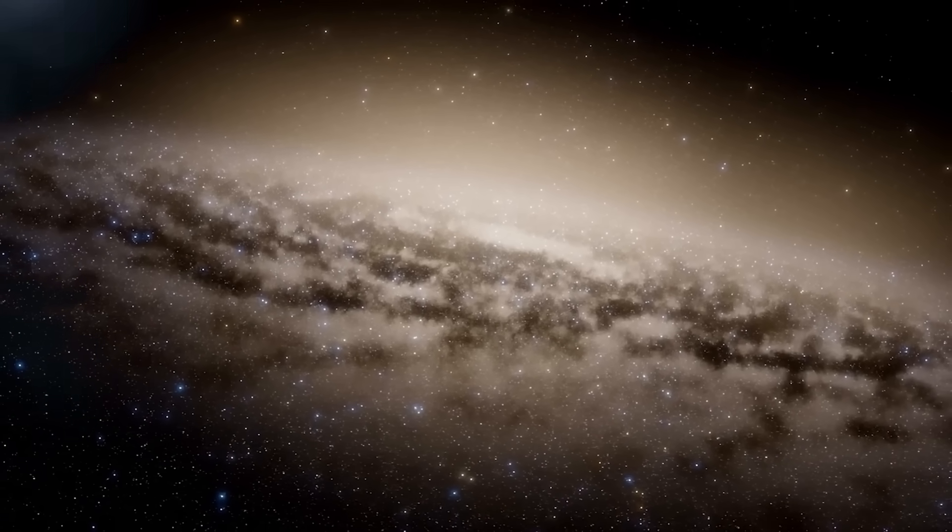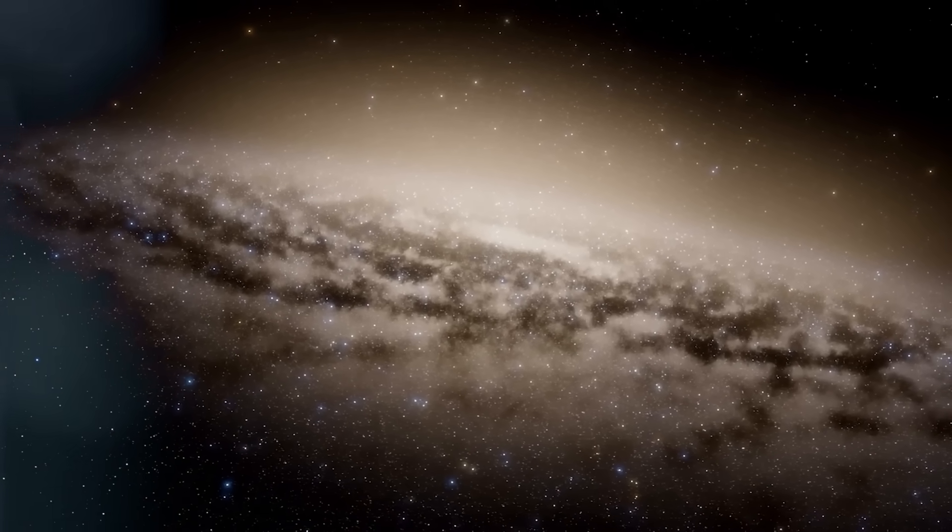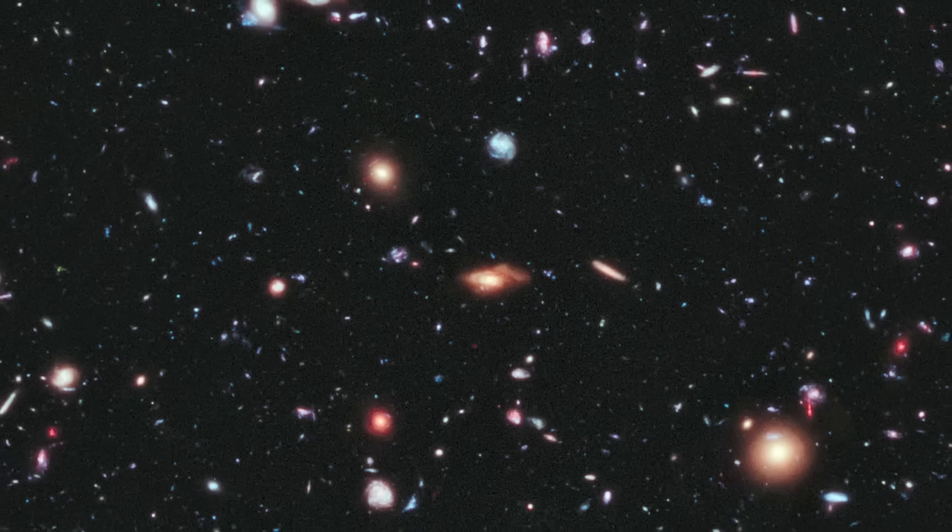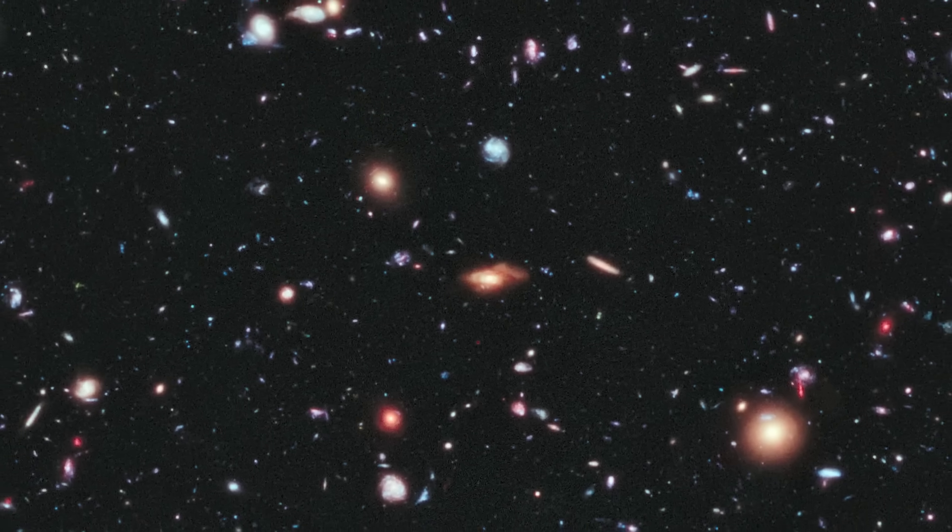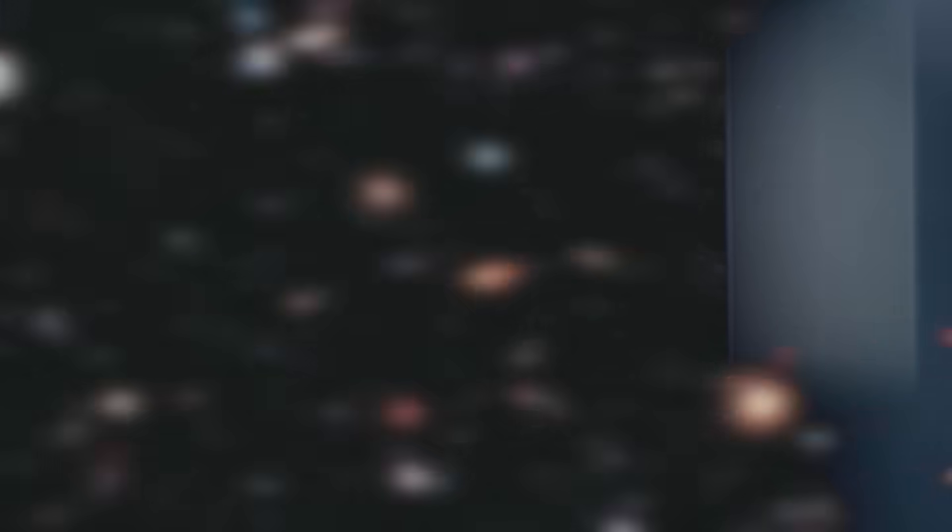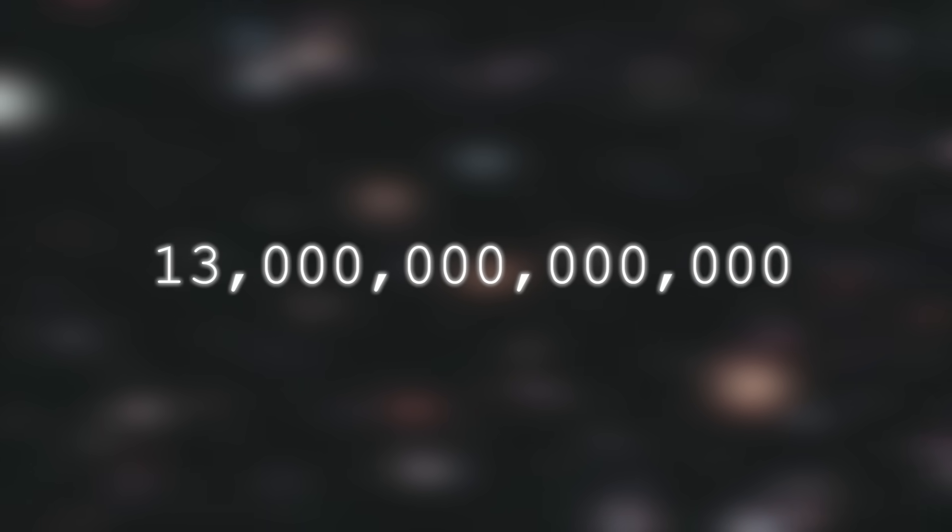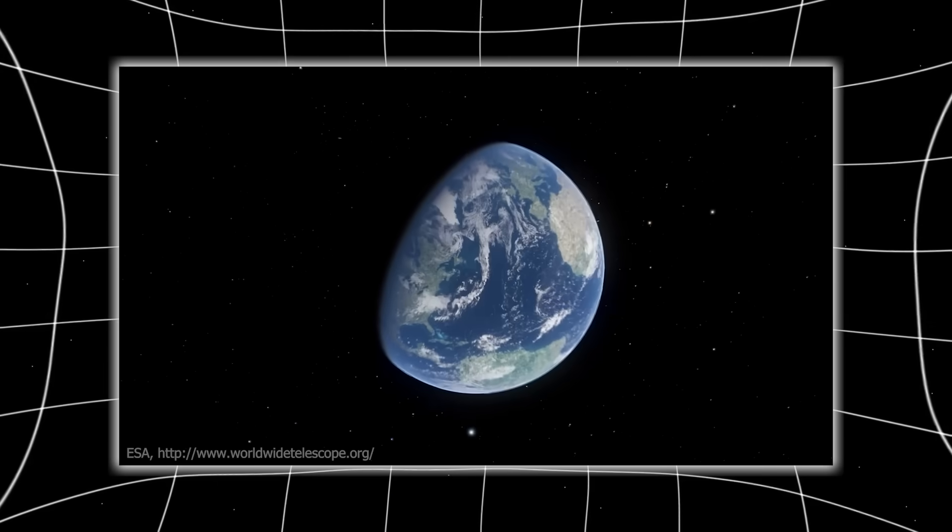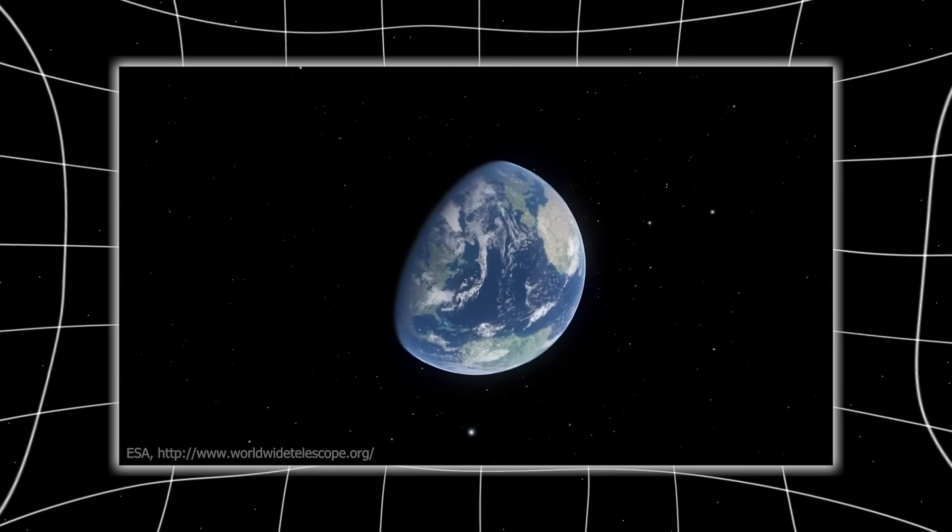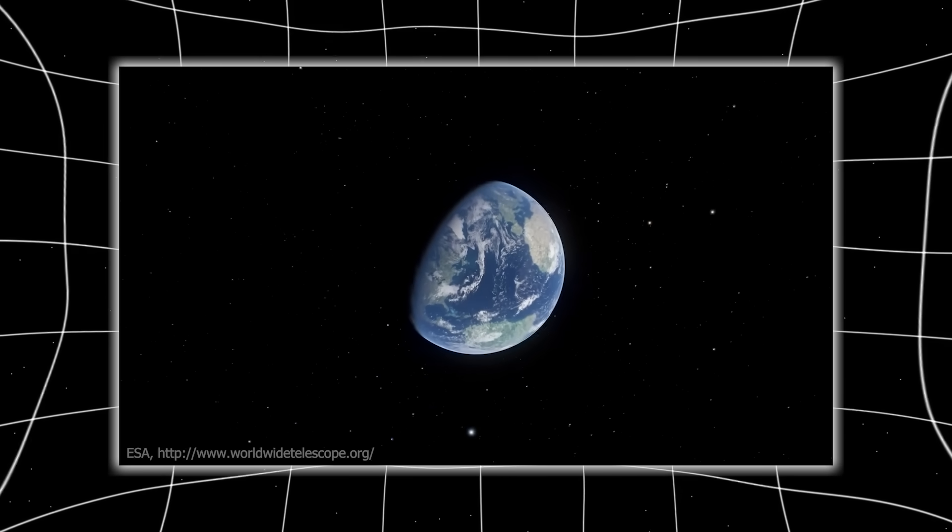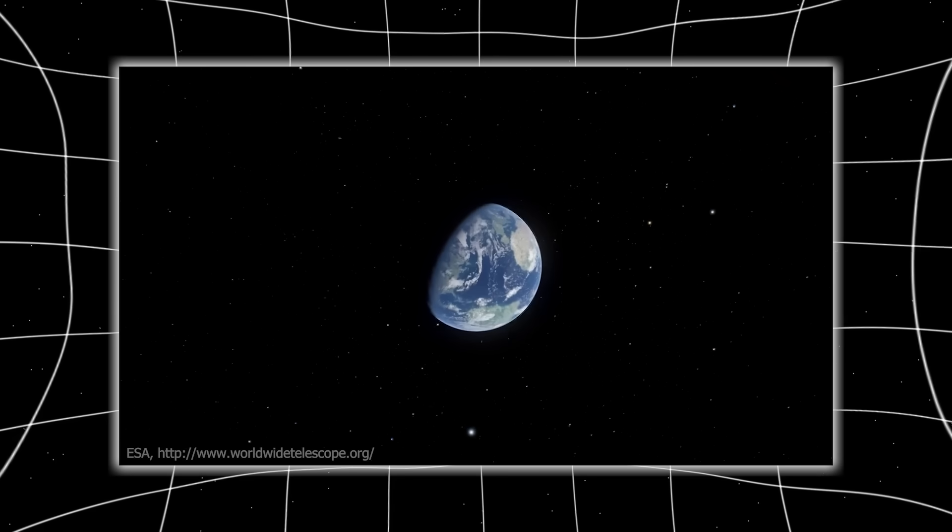Some of these early galaxies appeared to have the same mass as the Milky Way, but formed just a couple hundred million years after the Big Bang. For comparison, the Milky Way took over thirteen billion years to become what it is now. According to standard cosmology, in the first few hundred million years, matter hadn't even cooled enough to form stable structures.